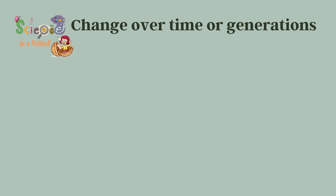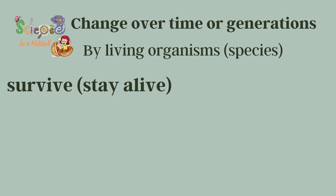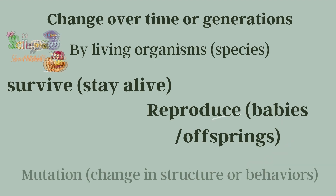So again, what is adaptation? Adaptation is a change over time, or over many generations, by a living organism to adapt — which means to survive, stay alive, and to reproduce, which means to have babies of their own. In a more scientific way, we call them off-springs. And this process is done by mutation.